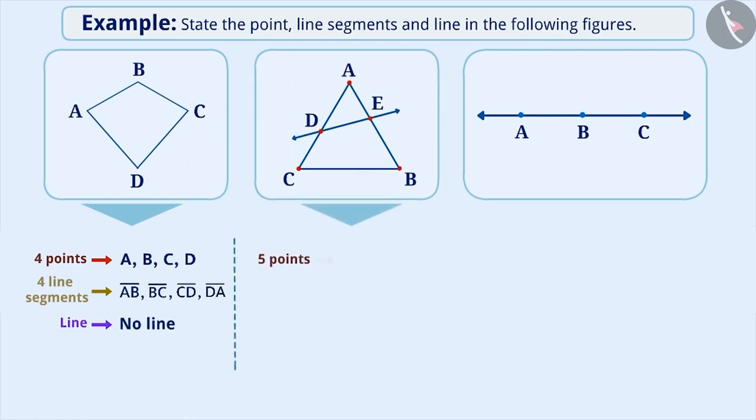The second figure has five points in it, point A, point B, point C, point D and point E. Can you tell me how many line segments are there?